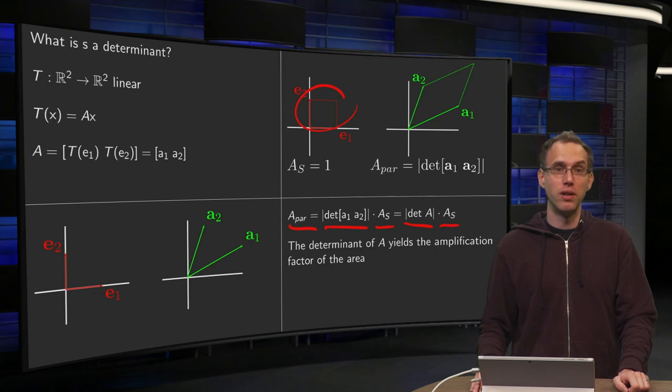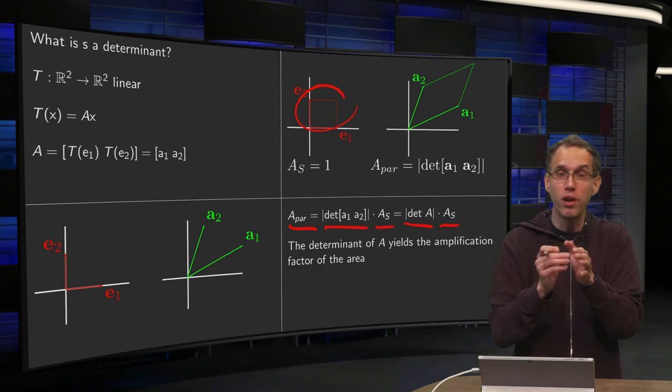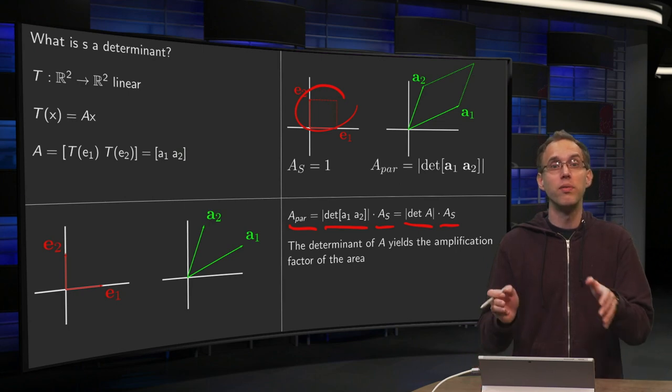So, that is what the determinant of your matrix A tells in conjunction with linear transformations. It tells you how much bigger or how much smaller your image is with respect to the original.